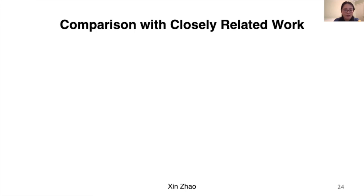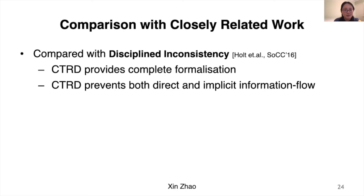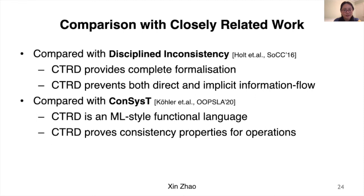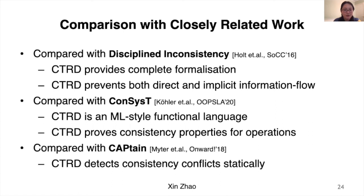Comparing with related work: first, Disciplined Inconsistency, where the consistency types concept originally comes from — our work CTRD provides a complete formalization and uses information flow techniques to prevent both direct and implicit information flow. Another related system is ConsistT, which was developed in parallel; the difference is that CTRD is an ML-style functional language while ConsistT is object-oriented. CTRD also provides consistency properties for individual operations. Finally, compared with Captain, which throws a runtime exception when a consistency conflict occurs, CTRD detects these consistency conflicts statically.